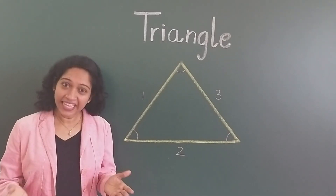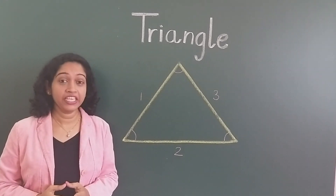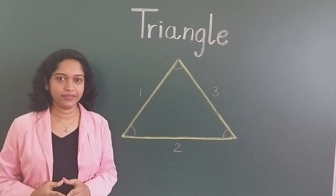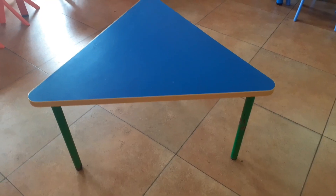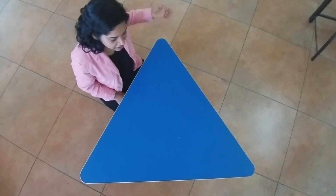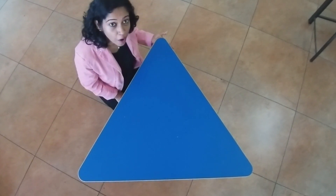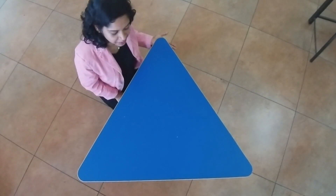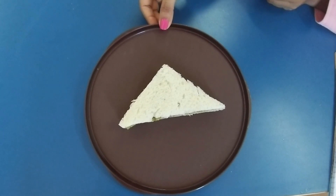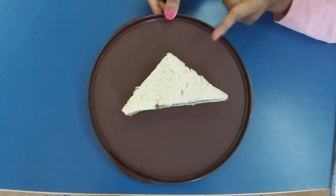Now let's see what different things we can find in the shape of a triangle. Here I have a table and it's in the shape of a triangle. Can you see and tell me what is this? Yes, it's a sandwich.